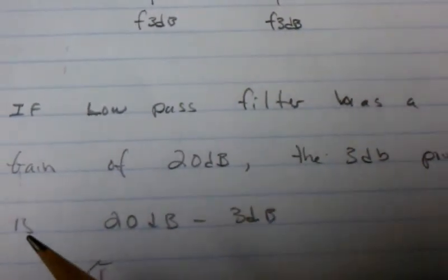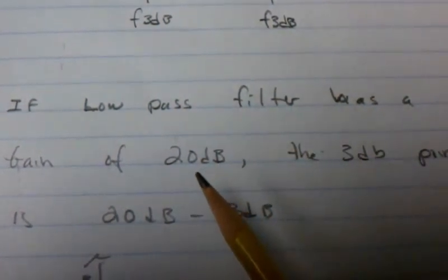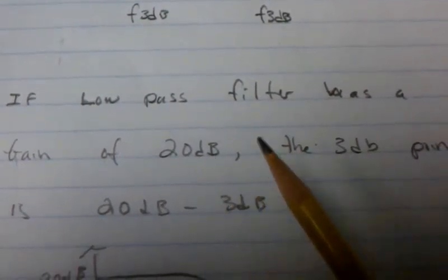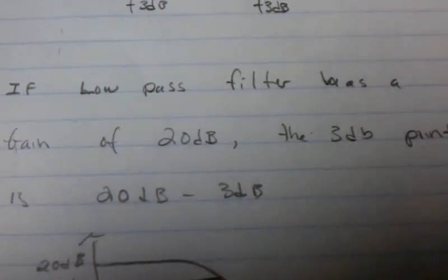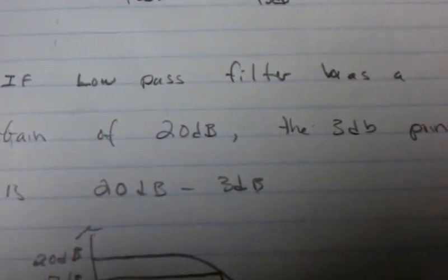And if you want to essentially have an equation for it, you just take the maximum gain of the filter, AC or DC, subtract the 3dB point and get your 17, in this example, dB point.